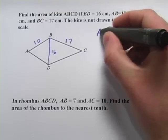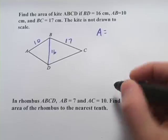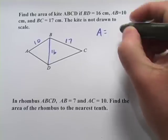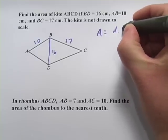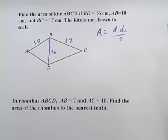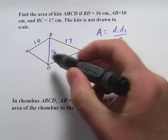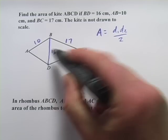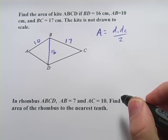Well, the formula for the area of a kite, probably the easiest way to find the area, is if you have both of the diagonals. It's the first diagonal times the second diagonal divided by two. We only have one of the diagonals here. The other diagonal is not there, so what are we going to do?